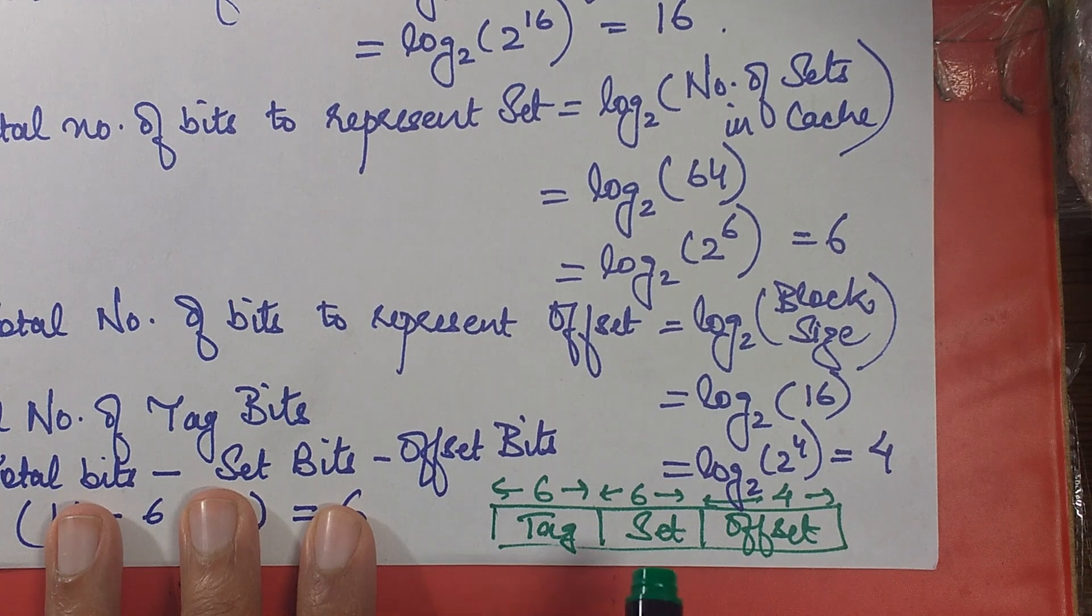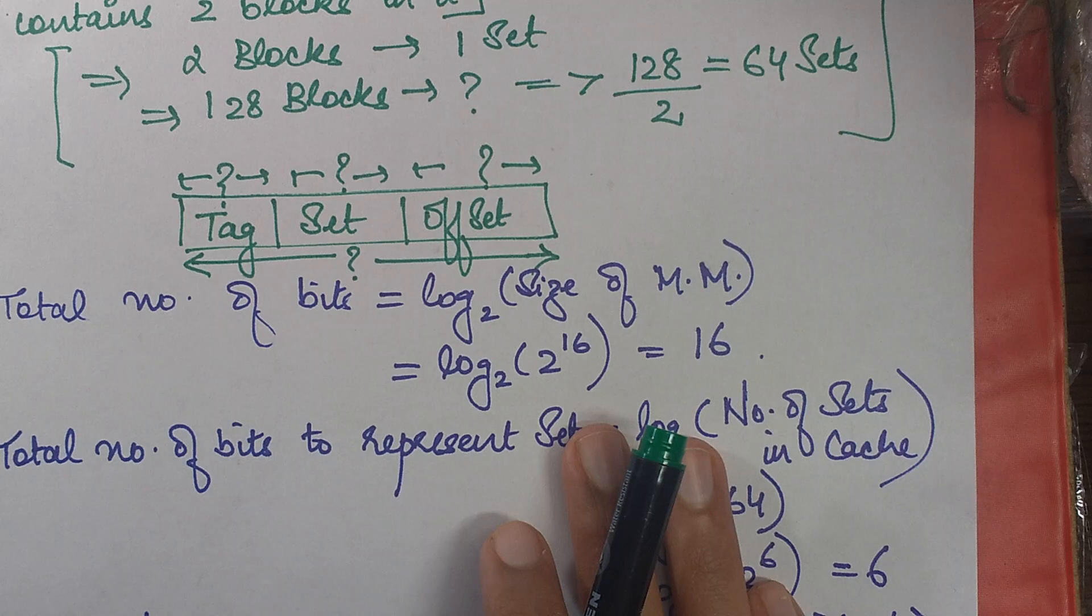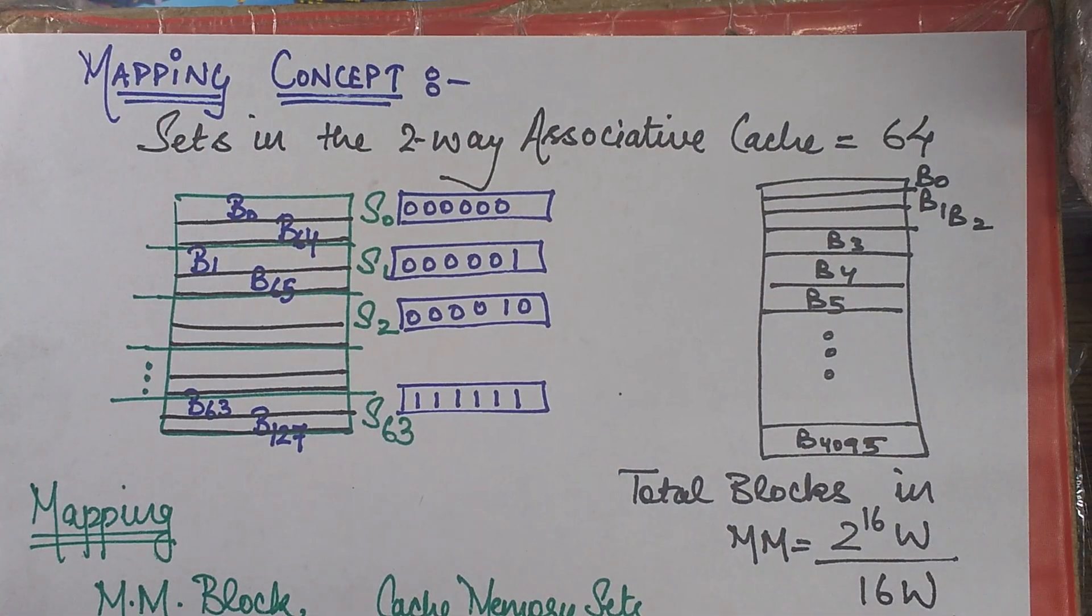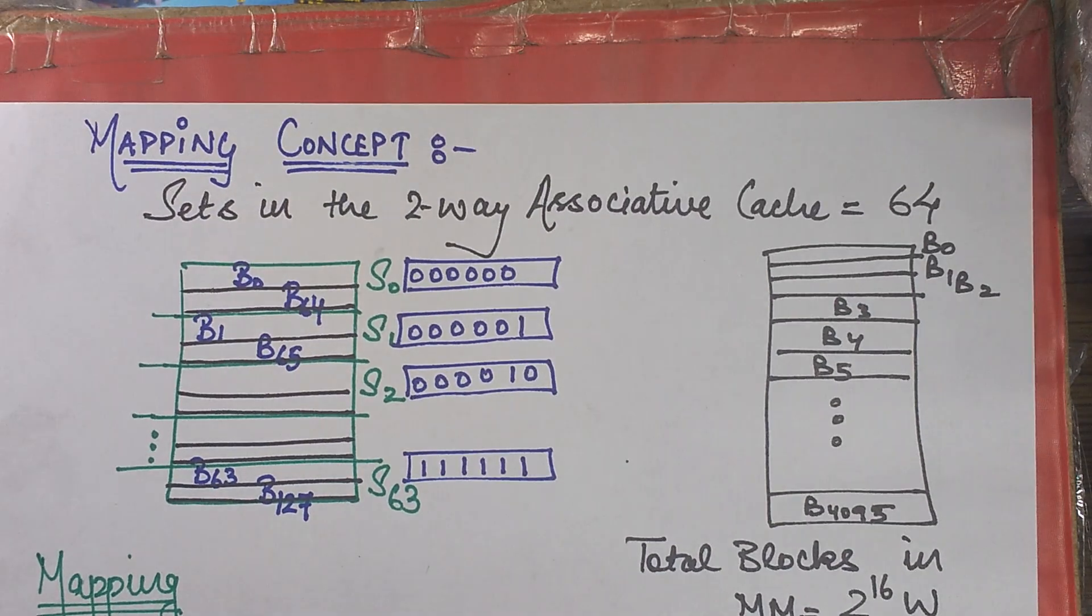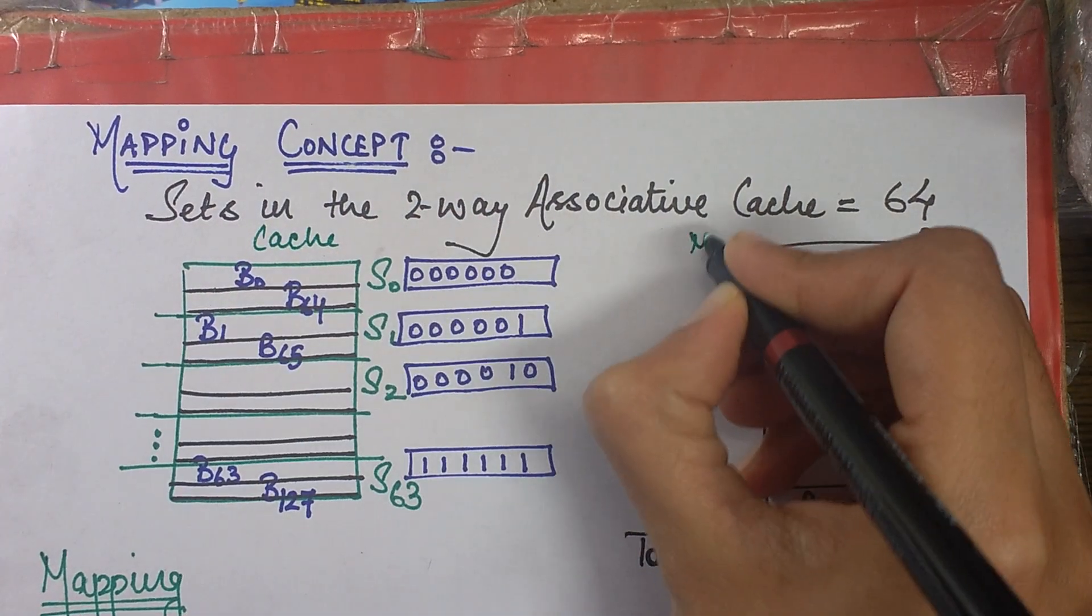So that's all for the representation, but we are not ending it over here. We are now going to discuss the detail concept, which will actually give you the idea of how the blocks are mapped into the sets. Now, as we already discussed, that set associative mapping is basically a hybrid of direct mapping technique and your associative mapping technique. So after you find out the sets, what you do is you just try drawing your cache and main memory diagram. So this is your cache and this is your main memory.